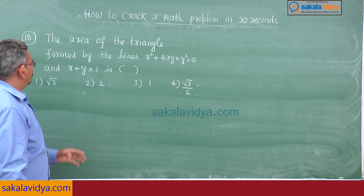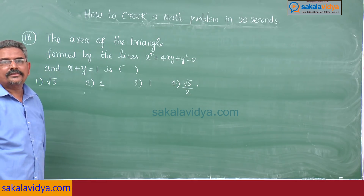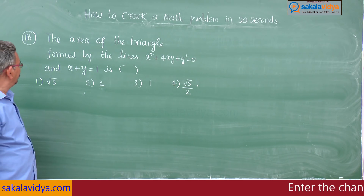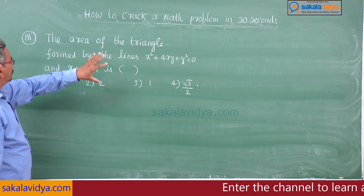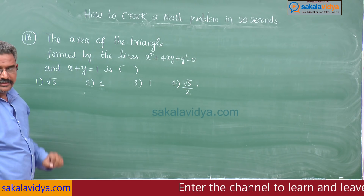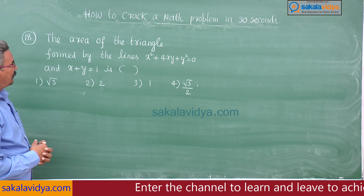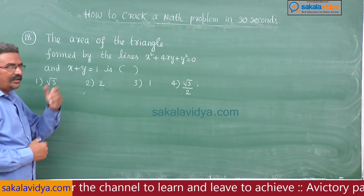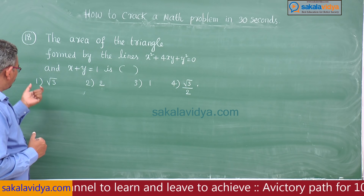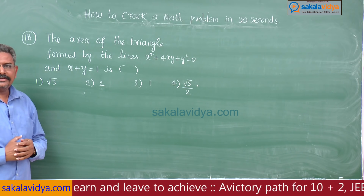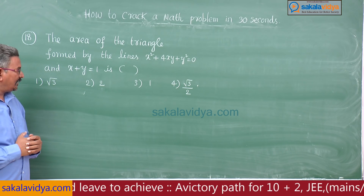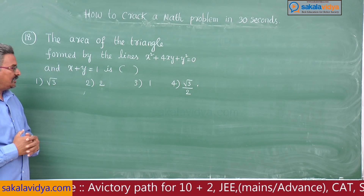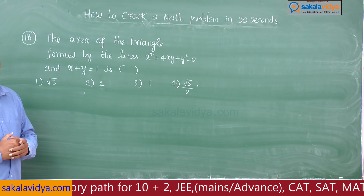This is one of the important problems that may appear in your competitive examinations. Now the 18th problem: The area of the triangle formed by the lines x² + 4xy + y² = 0 and x + y = 1 is — first option: √3 square units, second option: 2 square units, third option: 1 square unit, fourth option: √3/2 square units.